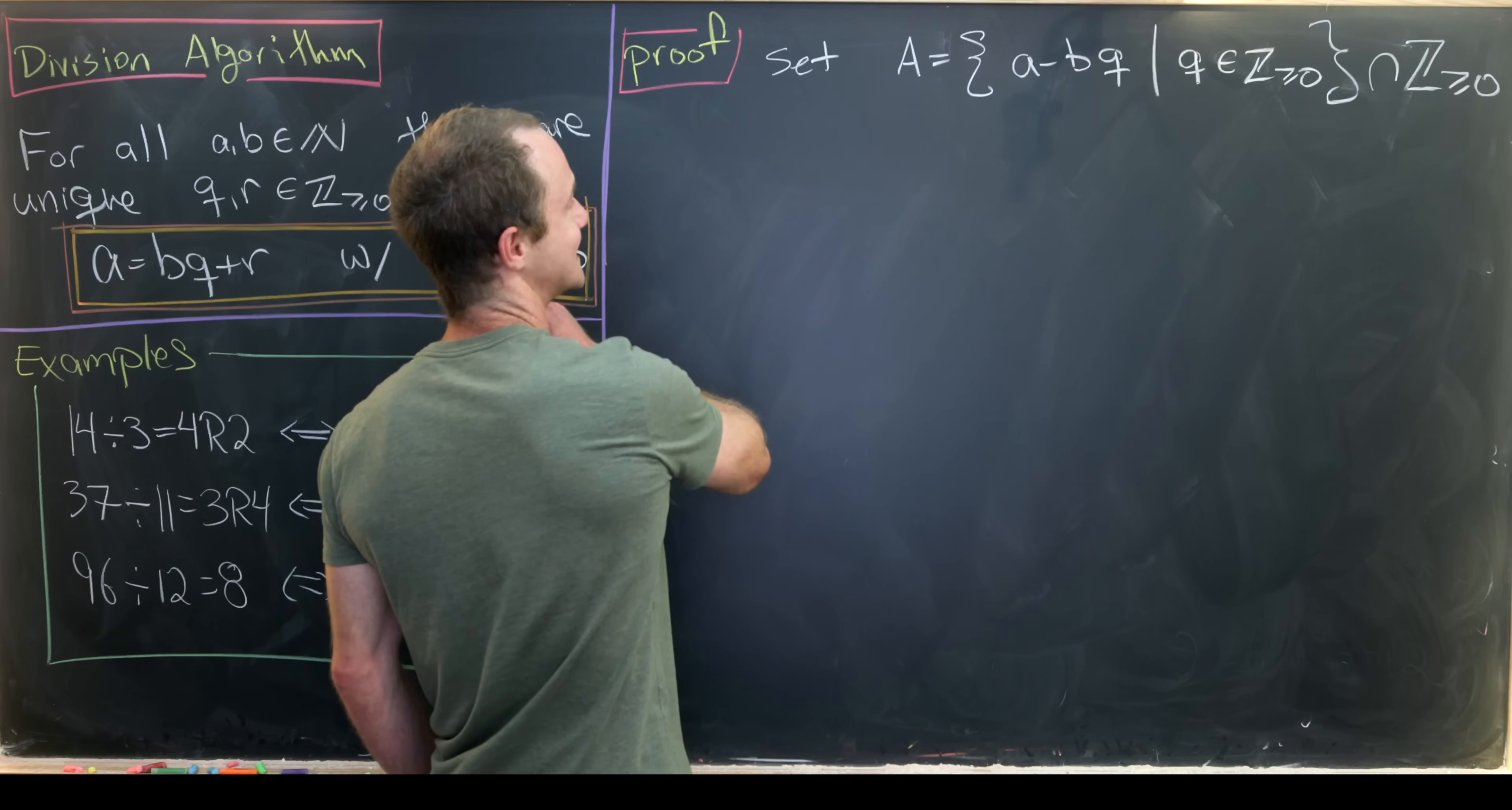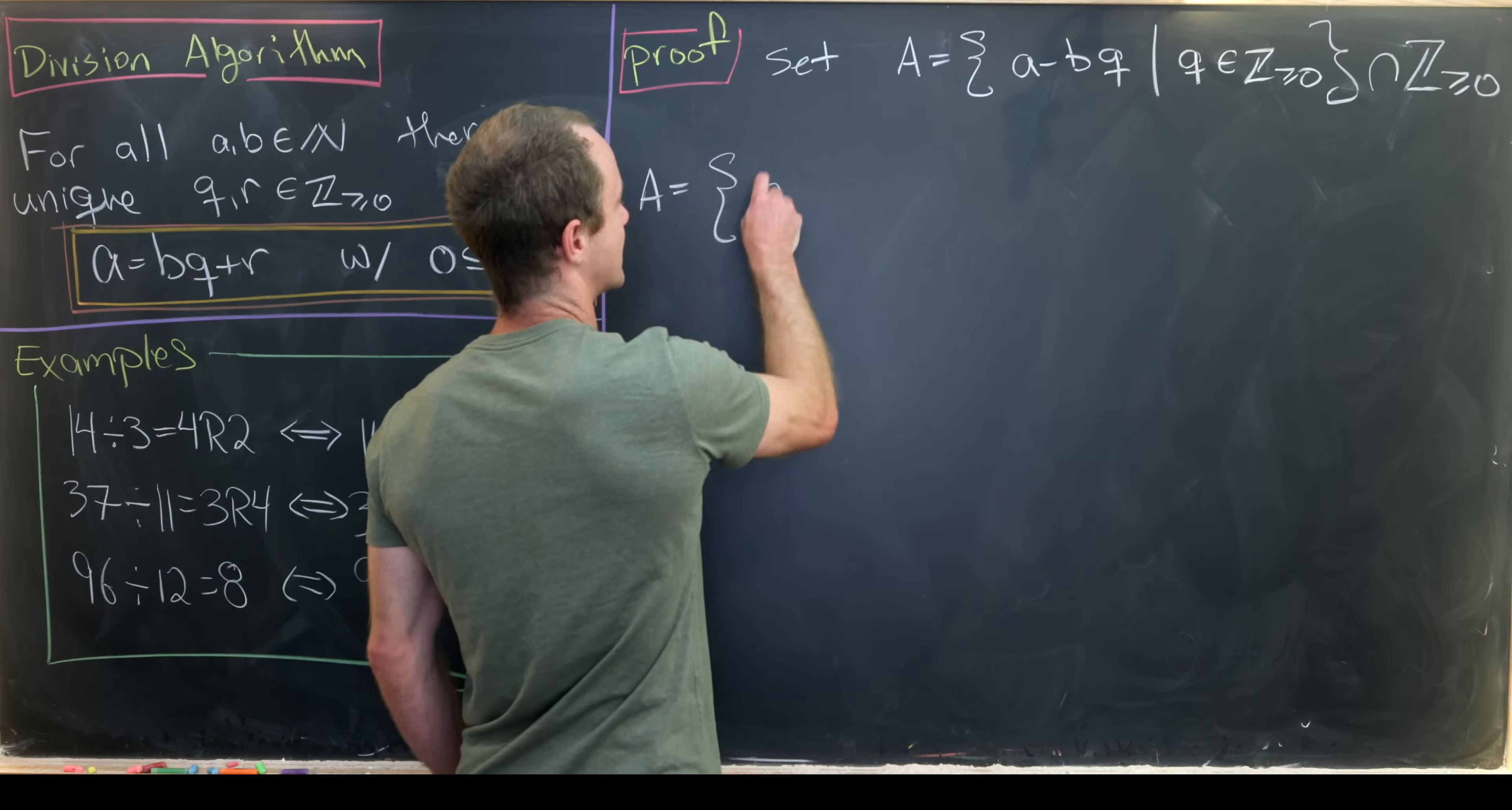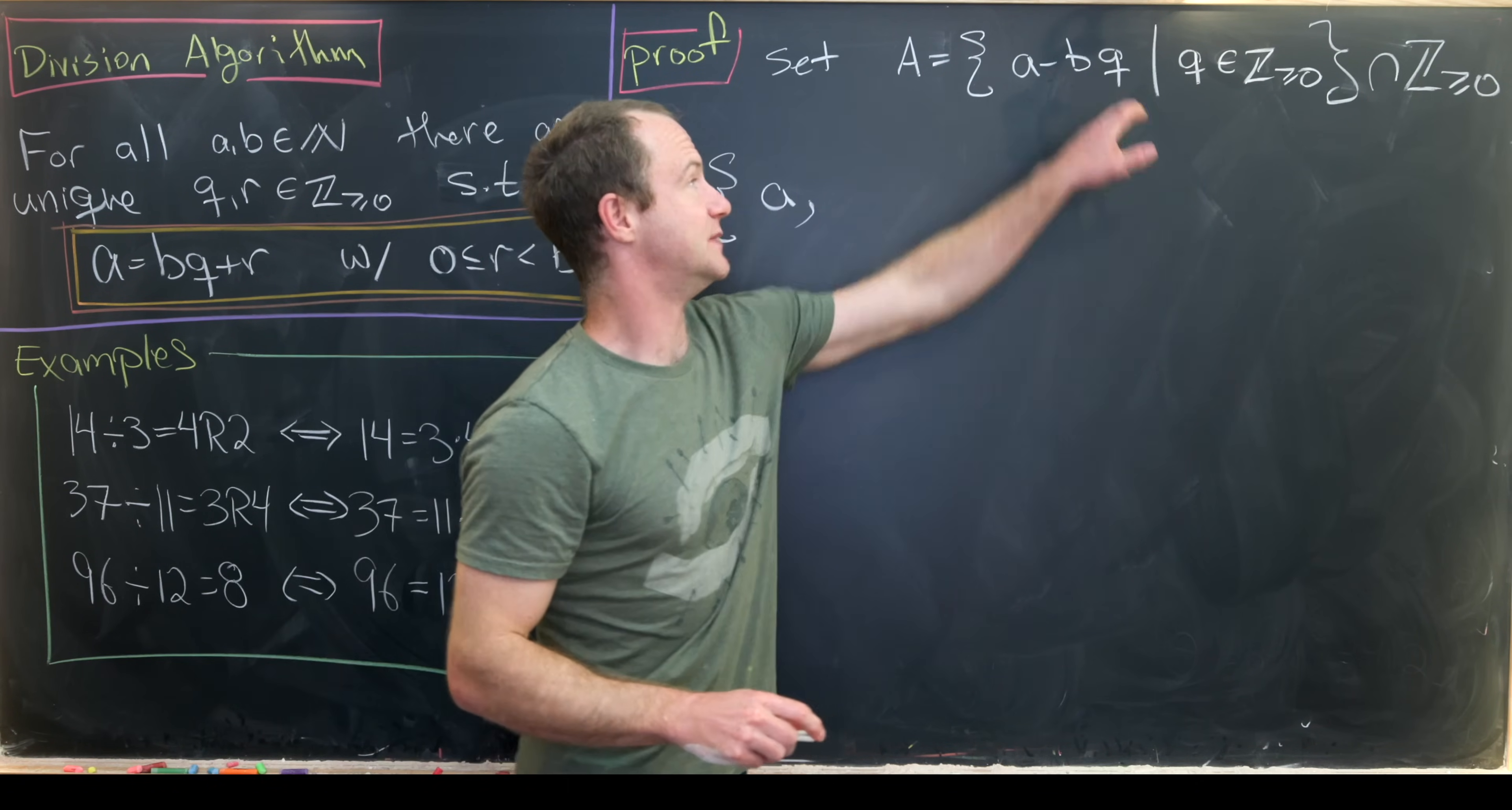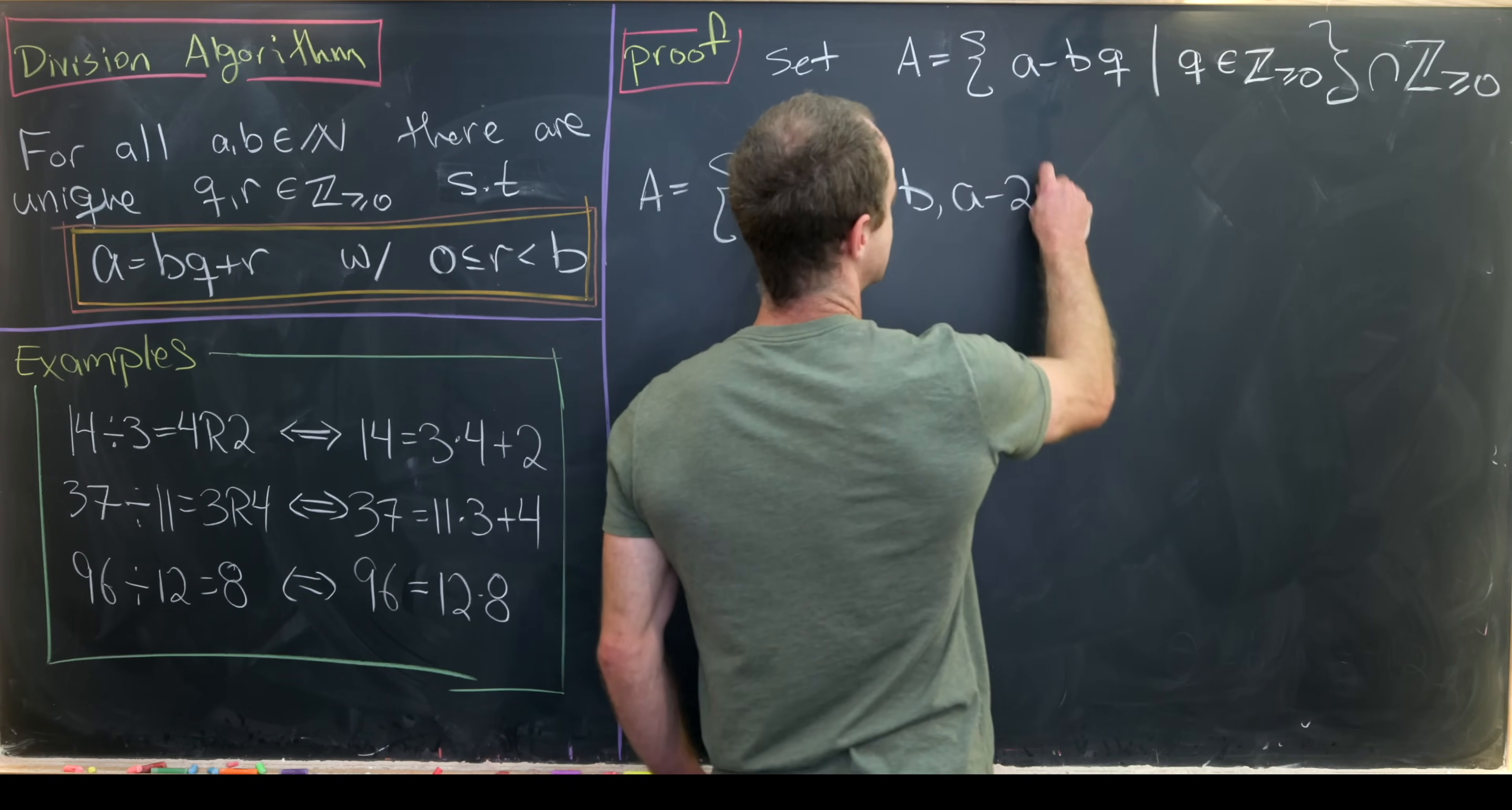Now maybe we could write this out to get an idea of what's going on here. So we have A equals—it'll start with just the number a, so that would be like a minus b times 0. And then next we'll have a minus b,